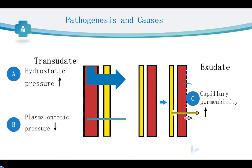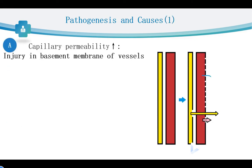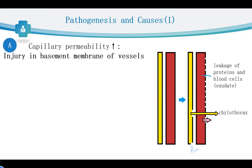Now let's look at these three mechanisms one by one. First, the increased capillary permeability is caused by injury in the basement membrane of the vessels. Because of increased capillary permeability, there will be leakage of large molecular substances such as proteins and blood cells into the pleural cavity. Once there is a large injury in the vessels, there will be a chylothorax or haemothorax caused by injury of the lymphatics and blood capillaries.